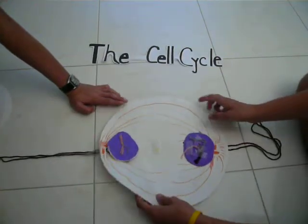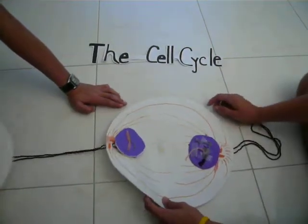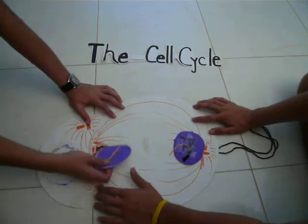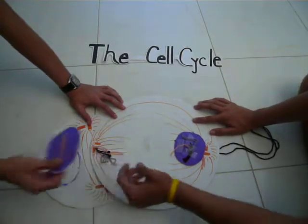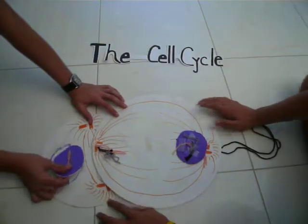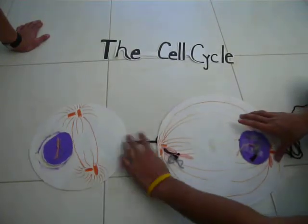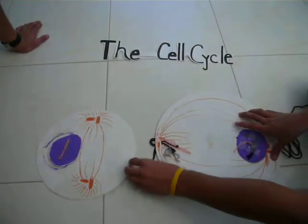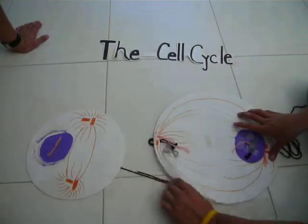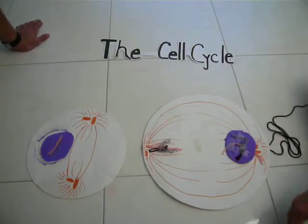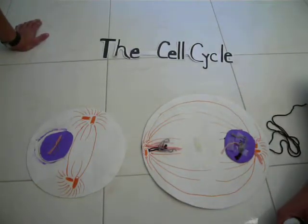The final stage of mitosis is cytokinesis, during which the cytoplasm of the cell begins to divide. When cytokinesis ends, two new cells have been created, and each is going to go through cell division again.